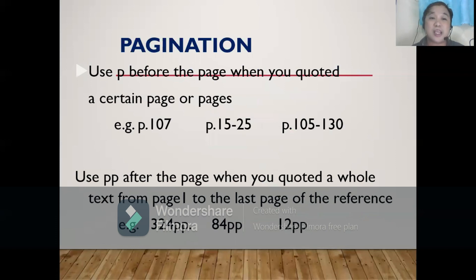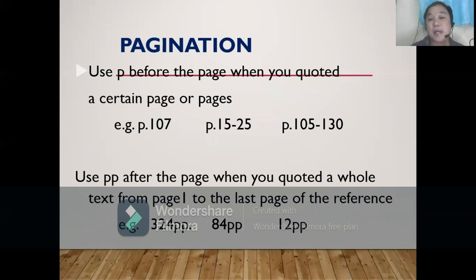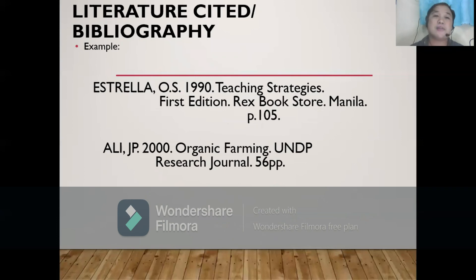How to provide pagination: use 'p' before the page number when you quoted a certain page or pages. Use 'pp' when you quoted a whole text from page one to the last page of the reference. See the provided example for literature cited or bibliography.